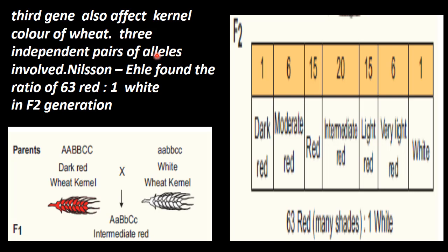Three independent pairs of alleles are involved in it. Three independent pairs of alleles decide and control the color of the wheat kernel.